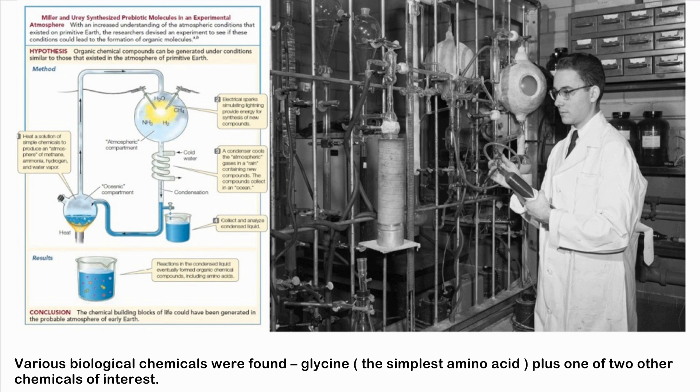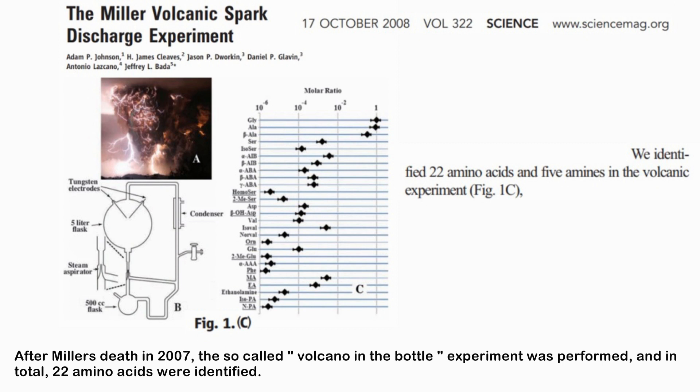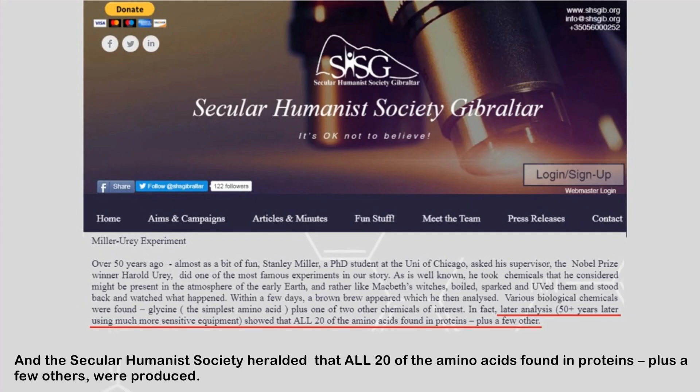Various biological chemicals were found, including glycine, the simplest amino acid. After Miller's death in 2007, the so-called 'volcano in the bottle' experiment was performed, and in total 22 amino acids were identified. It was claimed that all 20 of the amino acids found in proteins, plus a few others, were produced.